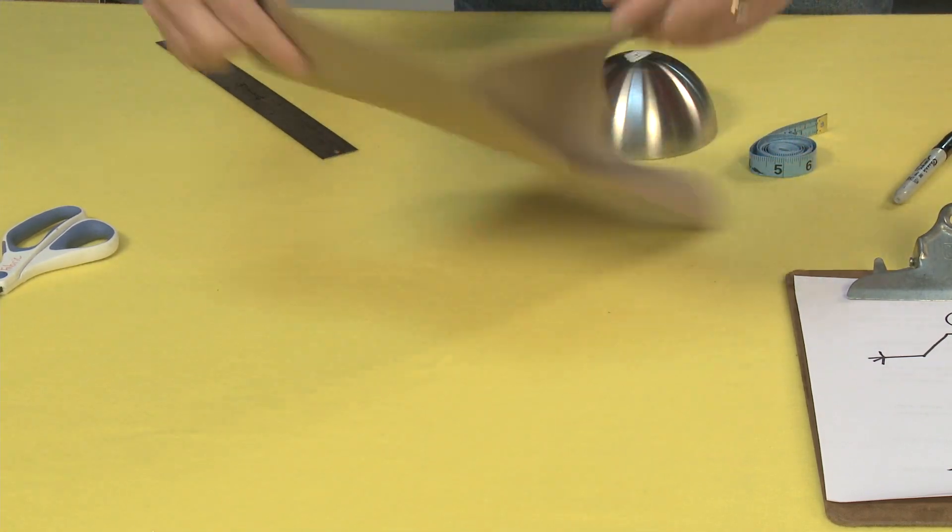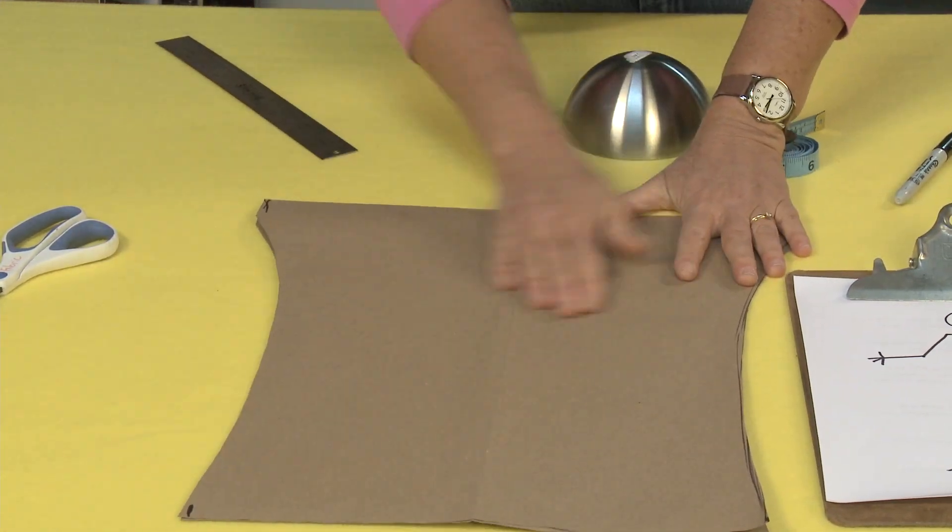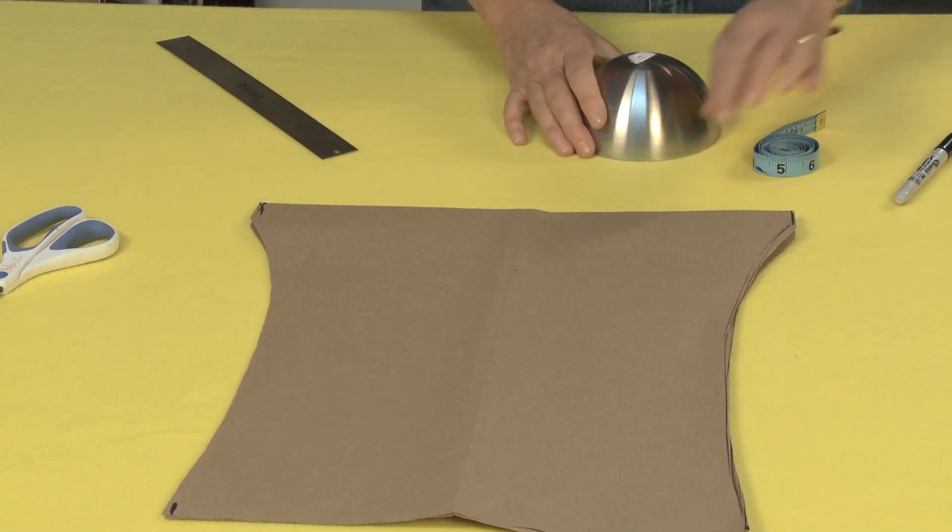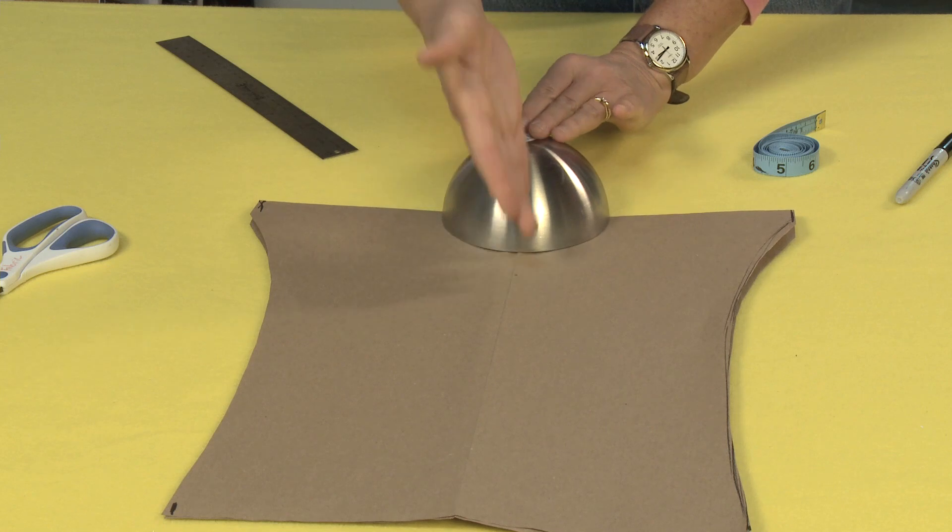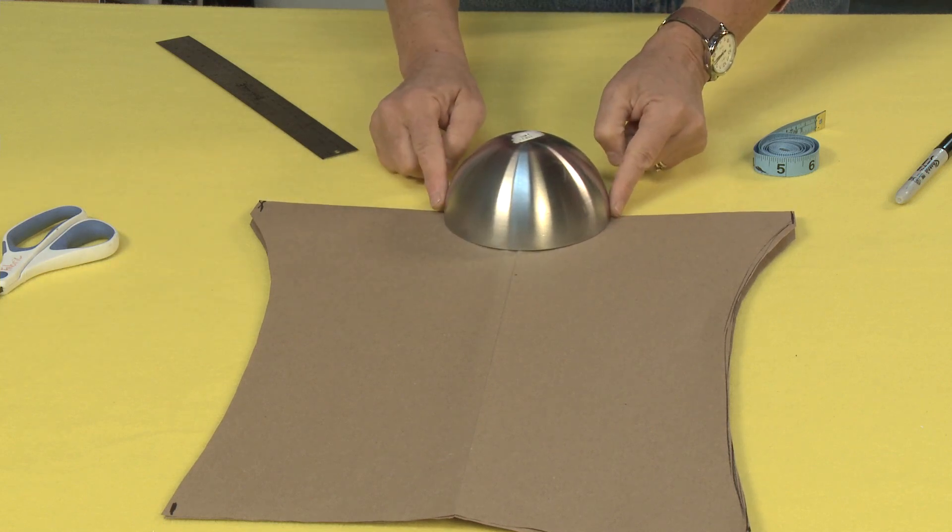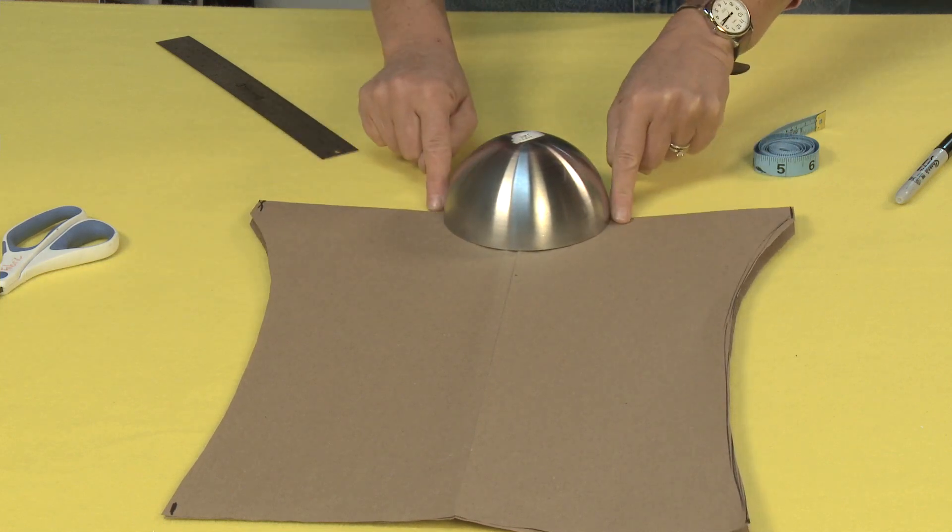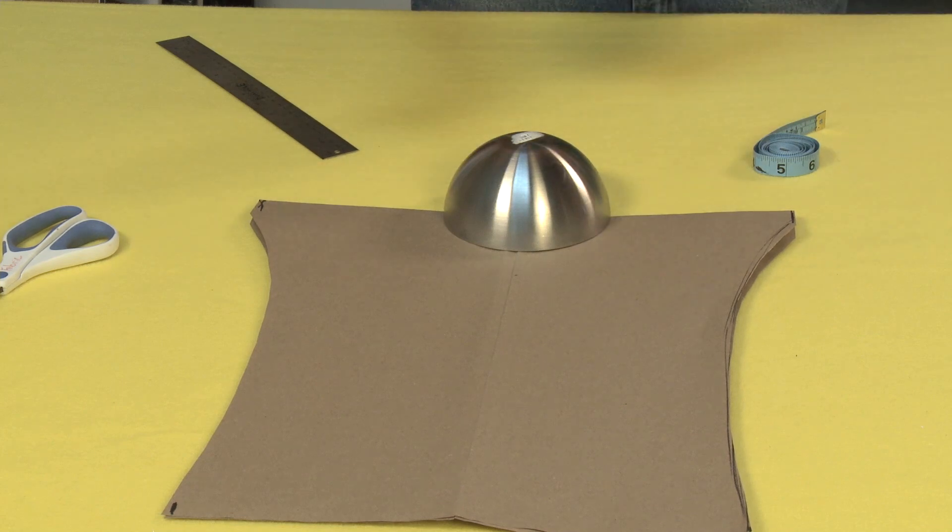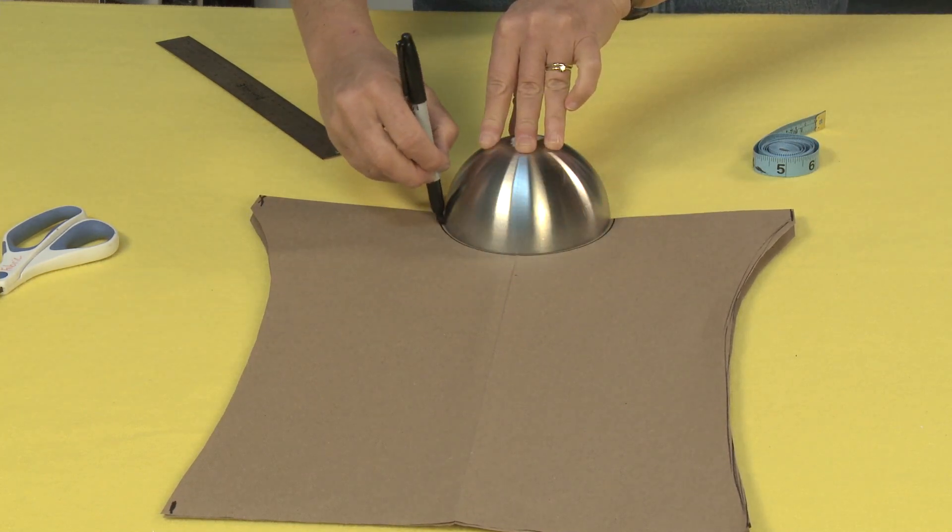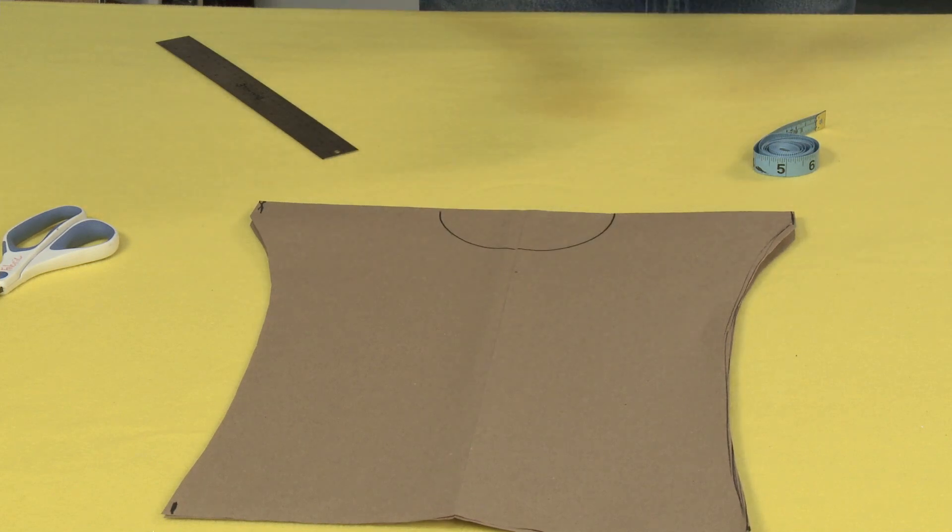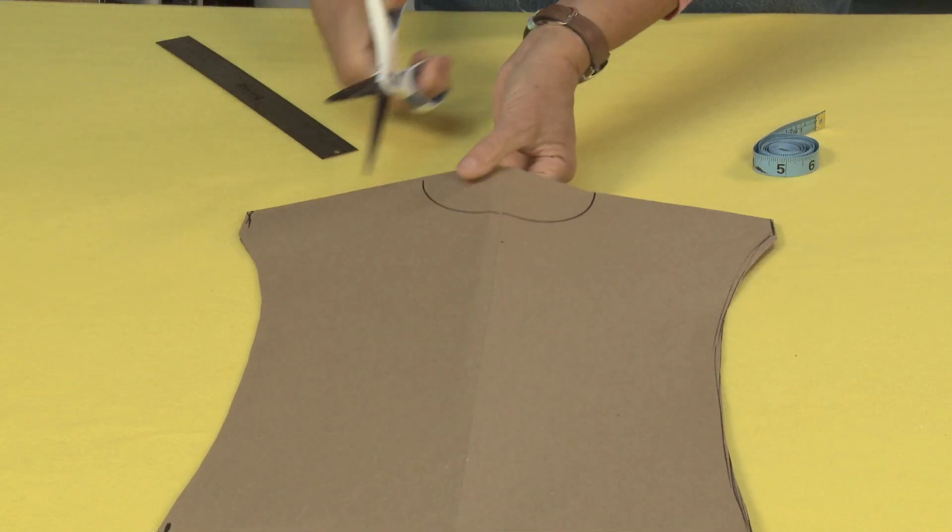This is giving me my basic shape. Now I'm going to take my bowl here and line it up so that it's right in the middle from here and from here. And I'm just going to trace around. This is going to be for my neckline. And cut that out.